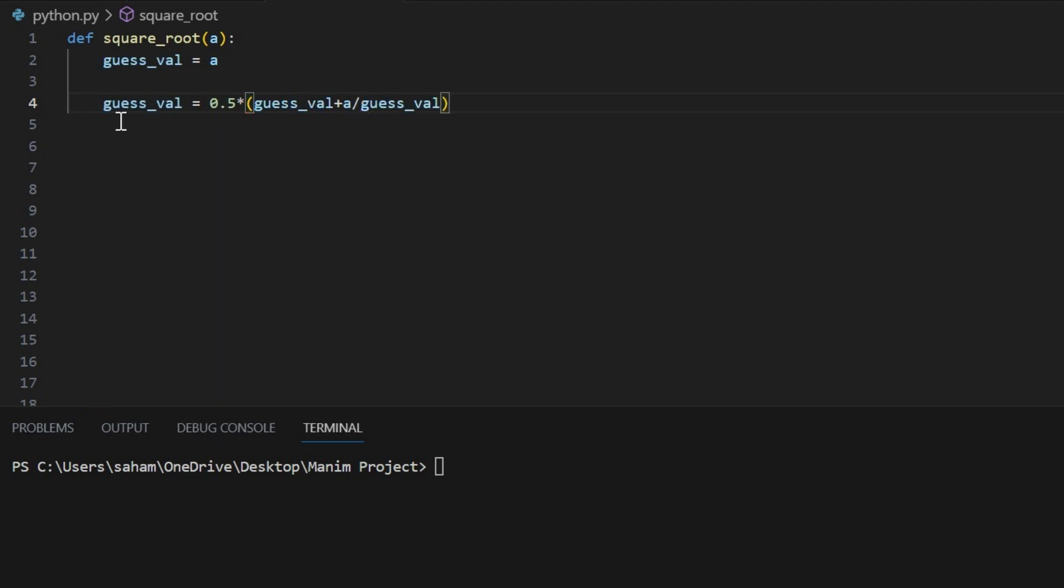We will keep doing this until our guess is almost the same as the actual square root. How do we know when to stop? We use a while loop with the condition. As long as our guess squared minus a is bigger than a very small number, we will keep going.